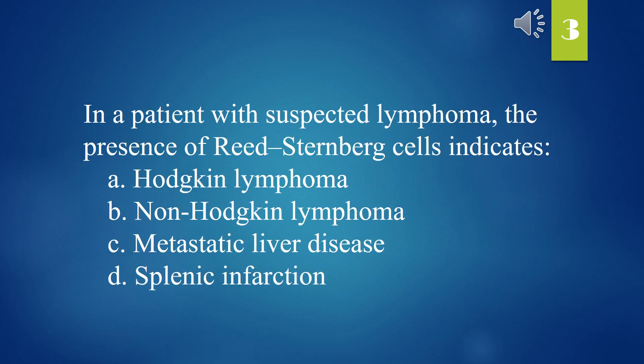In a patient with suspected lymphoma, the presence of Reed-Sternberg cells indicates: A. Hodgkin lymphoma. B. Non-Hodgkin lymphoma. C. Metastatic liver disease. D. Splenic infarction. The answer is A. Hodgkin lymphoma.